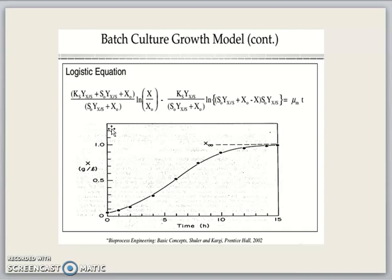The value of X asymptotically reaches the value of Y_X/S S_0 plus X_0. The plot that corresponds to the rate expression, where we have X_infinity here, is the maximum cell mass, which is also known as the carrying capacity.